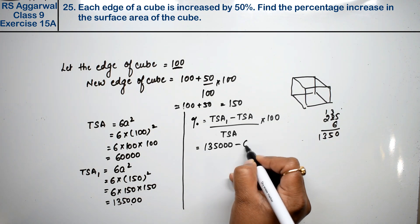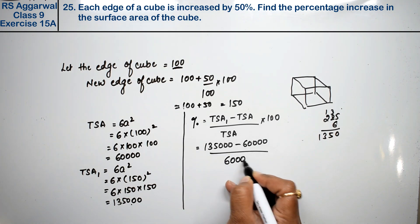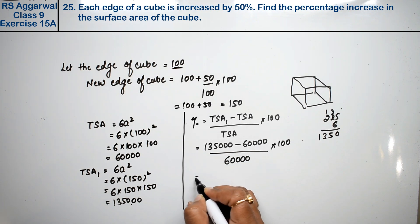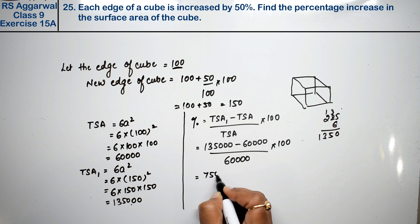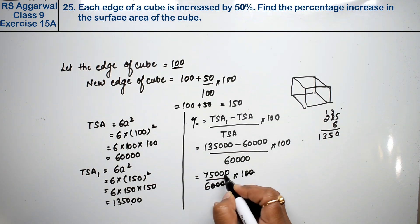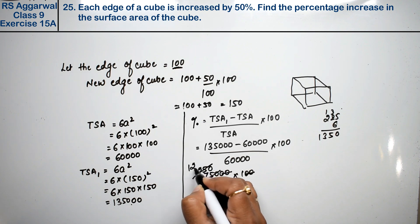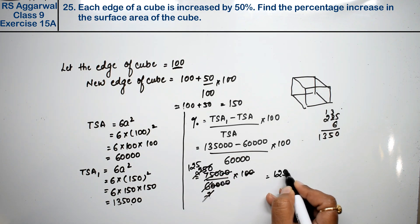This is 135,000 minus 60,000, that's 75,000 upon 60,000 into 100. Canceling zeros: 75 upon 60 into 100. 3×2 are 6, 3×2 are 6, 3×5 are 15. 2×2 are 4, 2×5 are 10, that means 125%. What is the percentage increase in the surface area from the old edge?